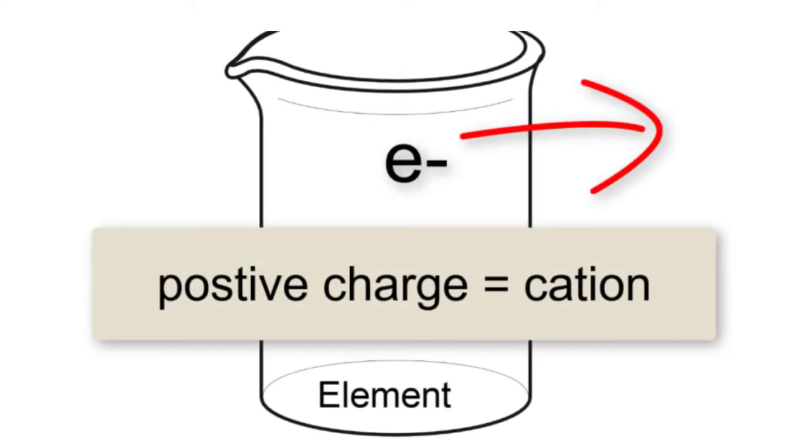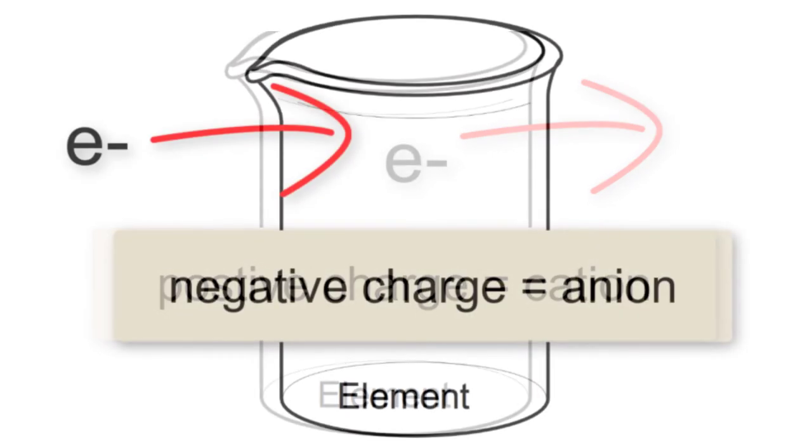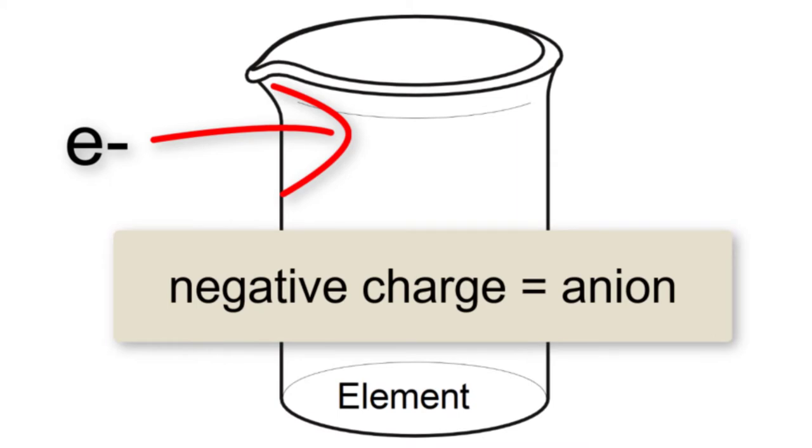We need to remember that cations are positively charged because they are losing electrons and anions are negatively charged because they are gaining electrons.